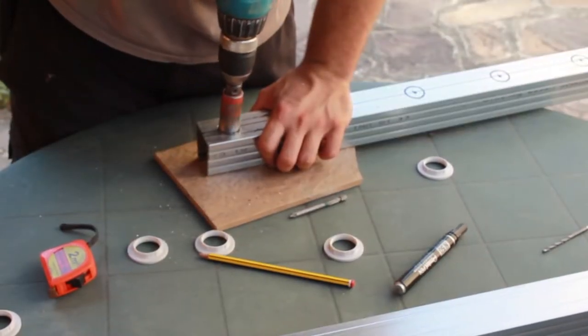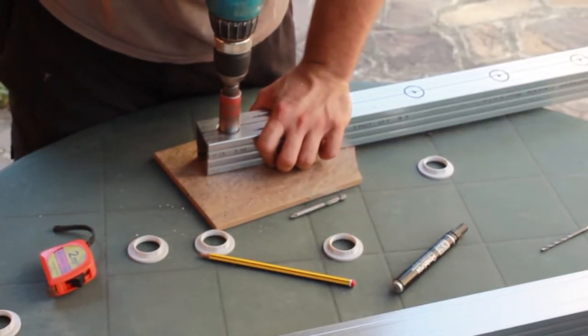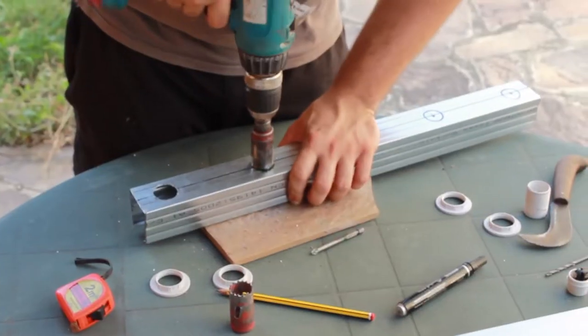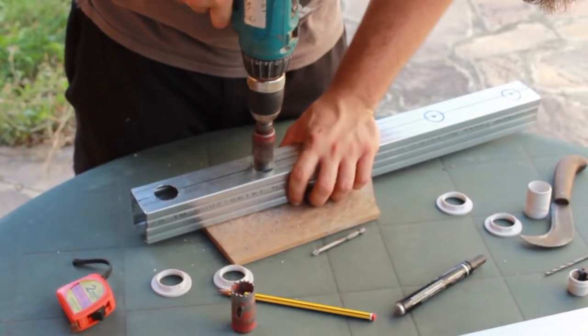The next step is to use the hole saw tip. Be sure to use the right size and perforate where your light bulbs will be.